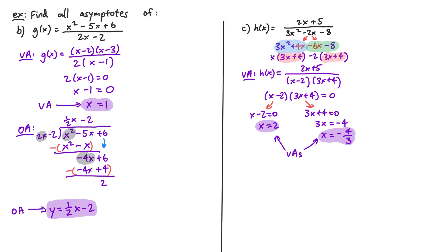Next, we determine if the function has a horizontal or oblique asymptote. In the numerator we have 2x — a degree 1 polynomial. In the denominator we have 3x squared — a degree 2 polynomial. Since the denominator has a higher degree than the numerator, we have a horizontal asymptote, and specifically it is y equals 0. We've now found all asymptotes for h of x. In this video, we went over how to find the different asymptotes of a rational function and got practice finding them in examples.